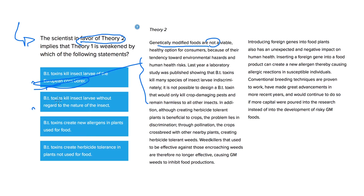Answer choice B says BT toxins kill insect larvae without regard to the nature of the insect. This is said, but it doesn't necessarily weaken Theory 1's argument that genetically modified foods are viable. You could have a situation where you don't need any insects for a crop to grow healthy, so this doesn't necessarily weaken Theory 1's argument directly.